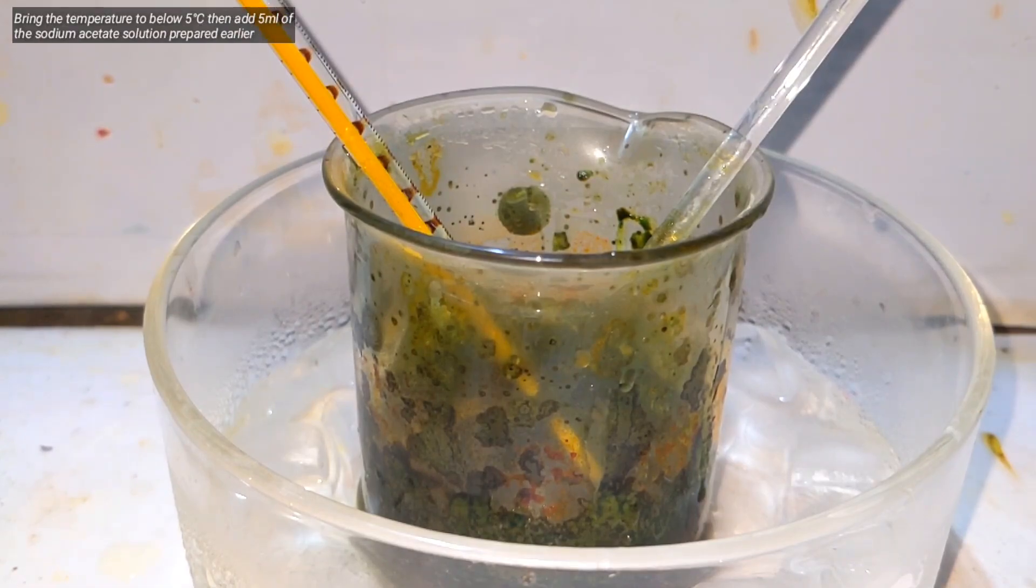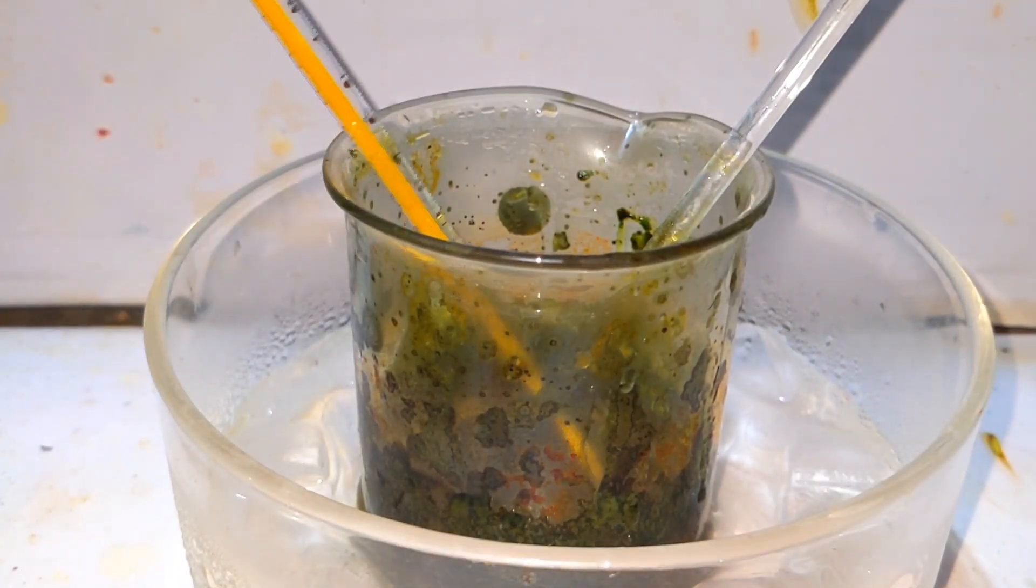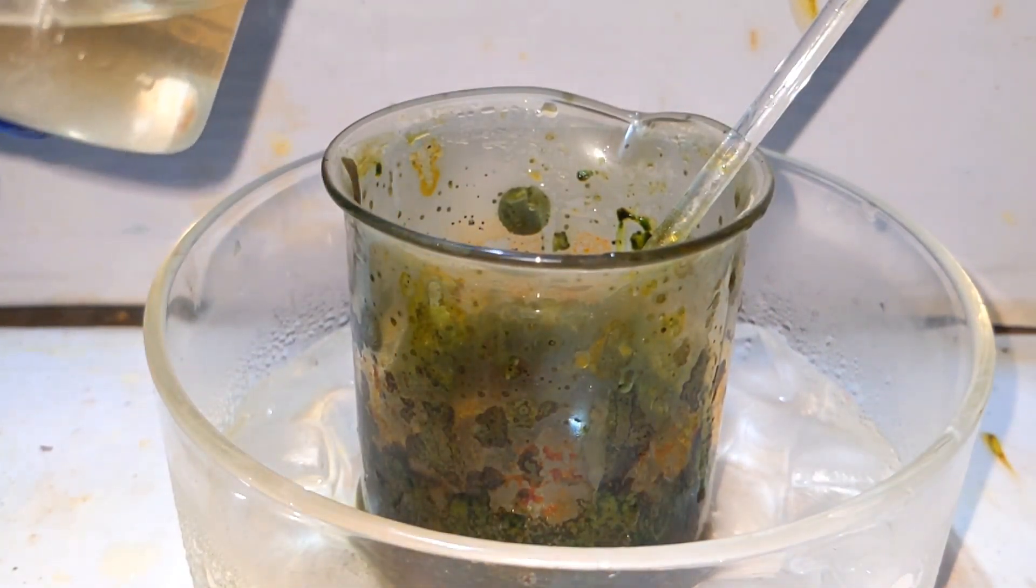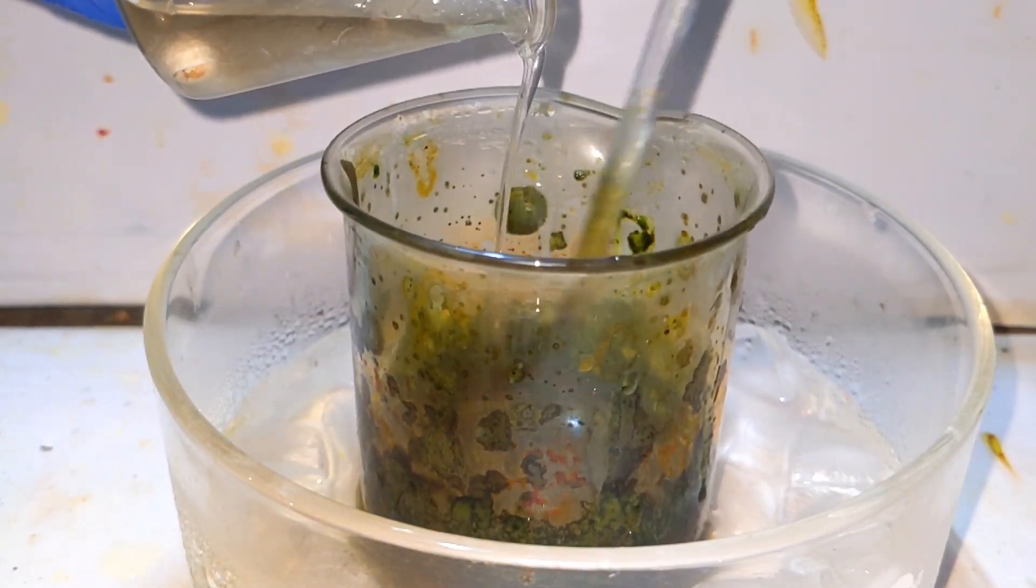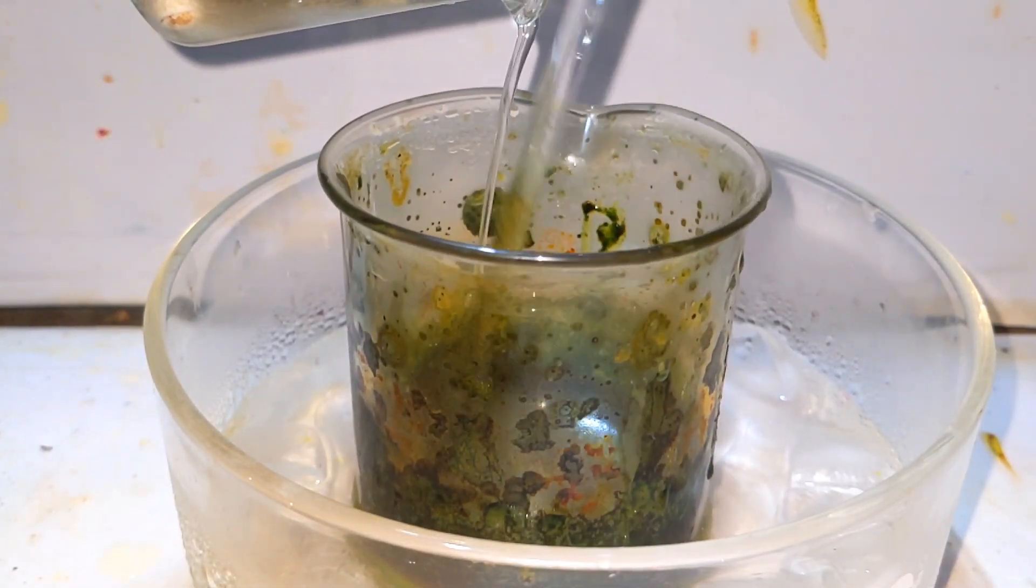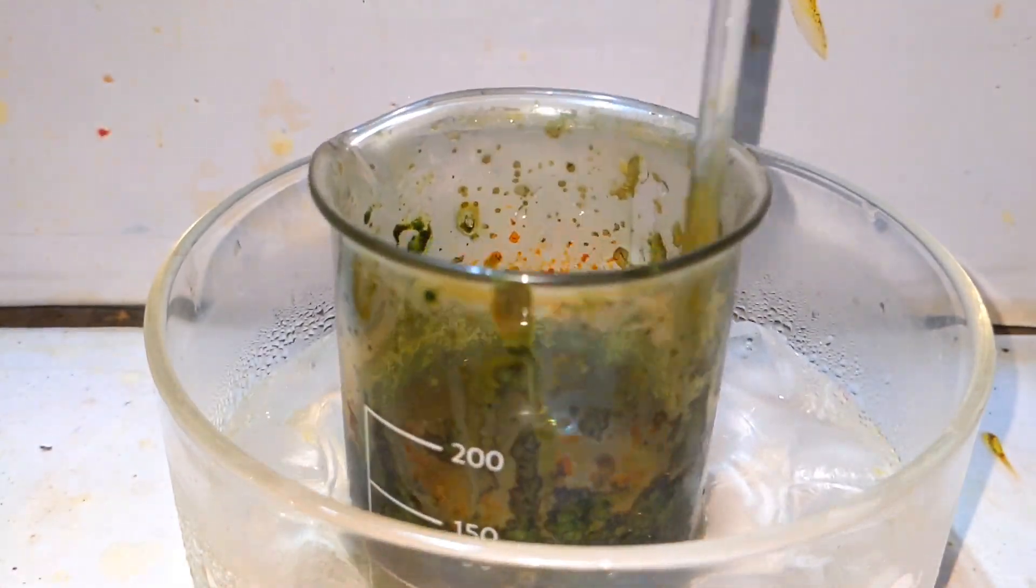We will now cool the beaker again in the ice bath and bring down the temperature to less than 5 degrees Celsius. After that with constant stirring I add half the amount of the sodium acetate solution which we had prepared earlier. Then we will continue stirring for about one hour and then only we will be adding the rest of the sodium acetate solution.